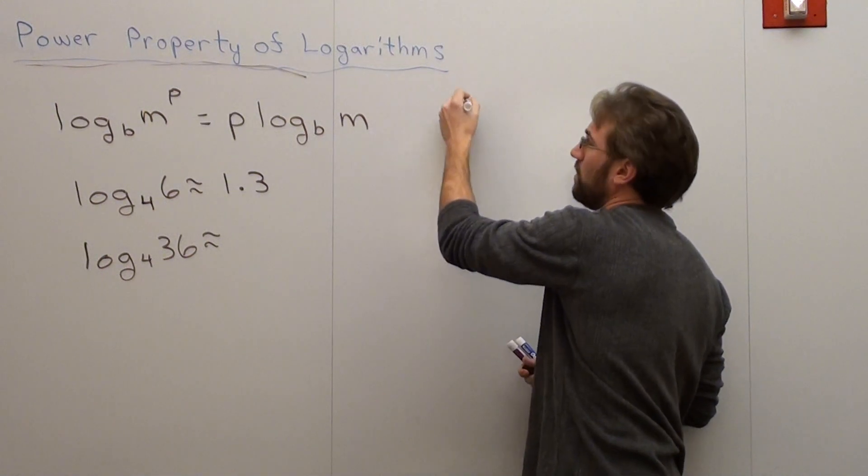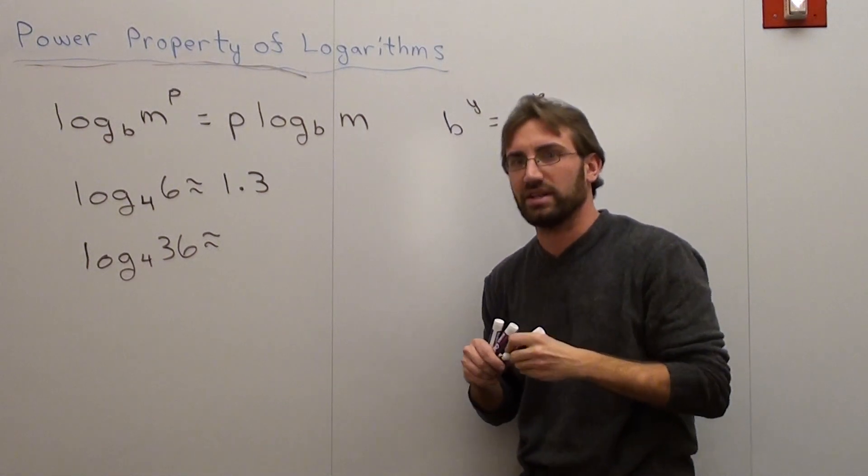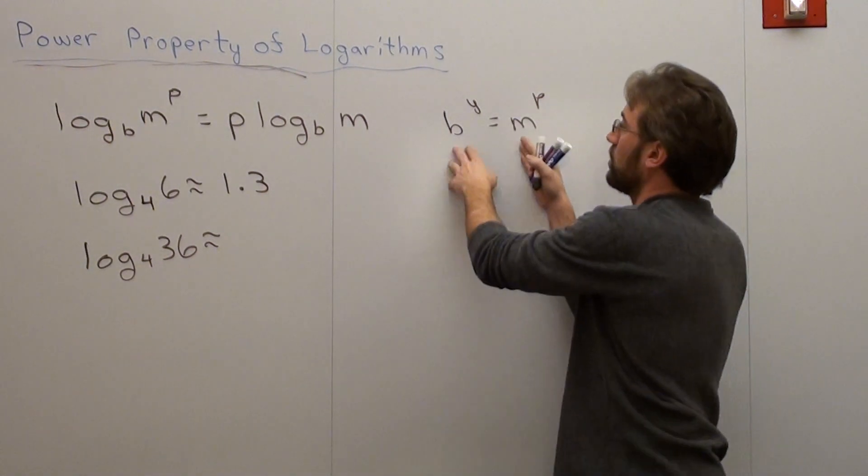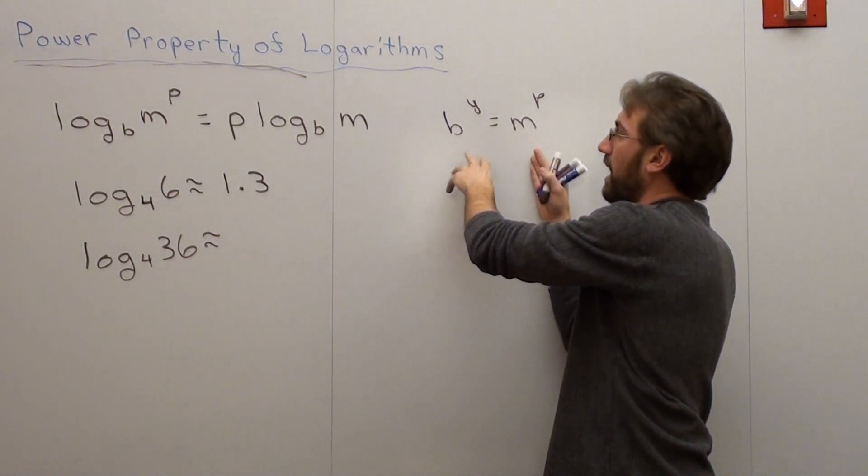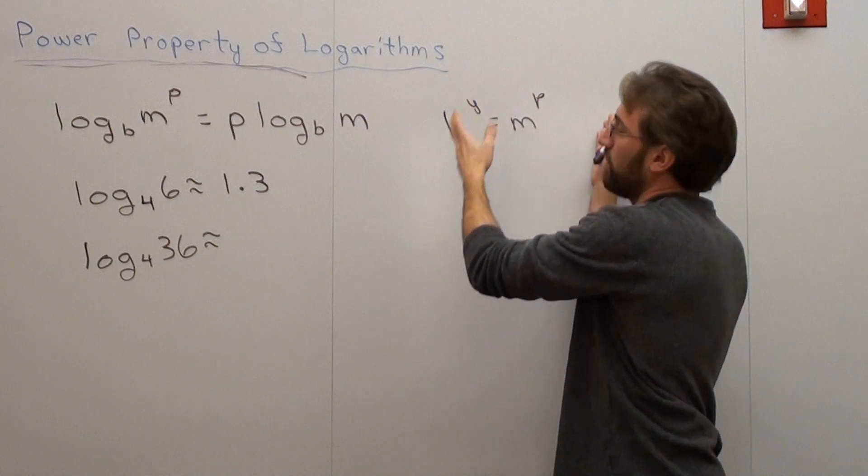let's say you want to turn this to exponential form. Be like b to the y equals m to the p. After you're done taking care of your bases and trying to simplify them, the p doesn't really have any result in terms of the actual bases, and it kind of gets factored into it later. Like if the bases were the same, y would equal p.